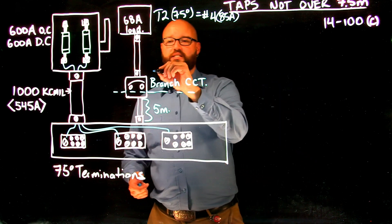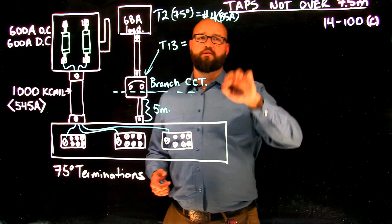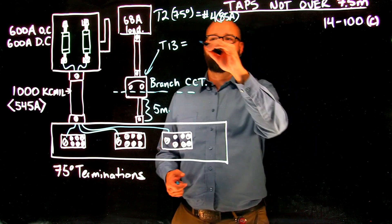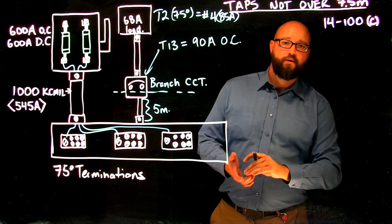And I go to table 13. I select my overcurrent to protect my 85 amp conductor. I'm gonna go with a 90 amp overcurrent.